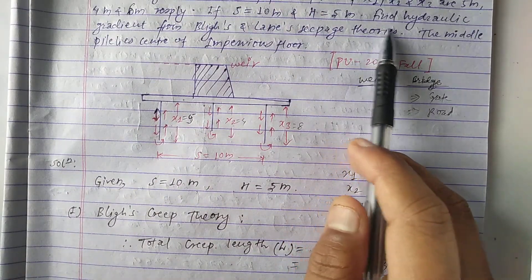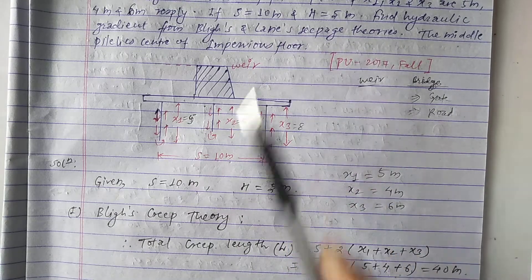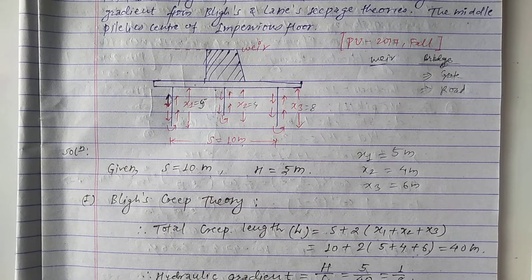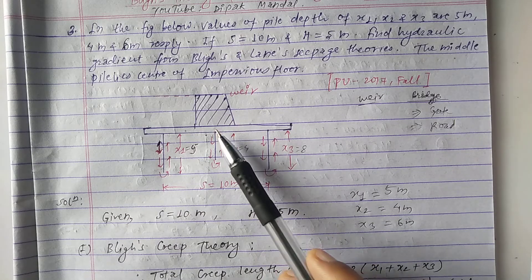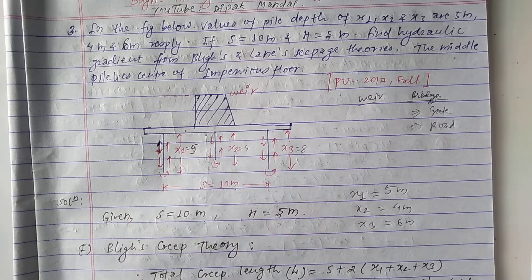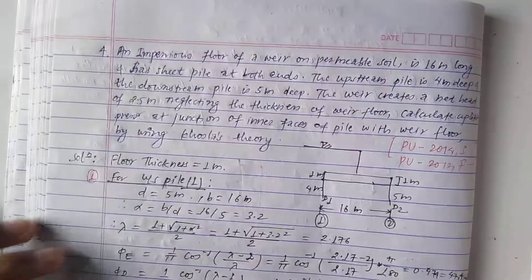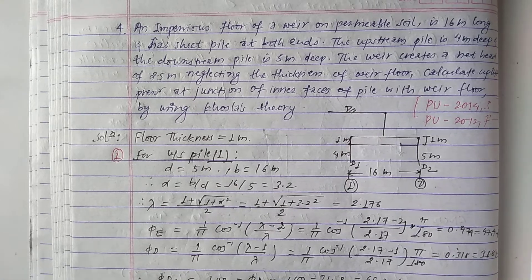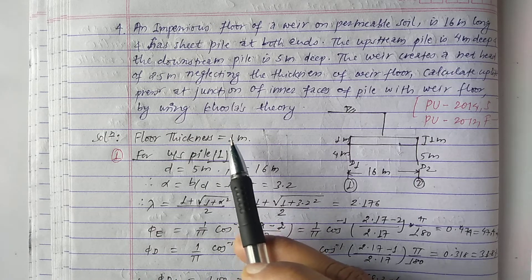So to summarize: according to Bligh's creep theory the hydraulic gradient is 1/8, and according to Lane's weighted creep theory the hydraulic gradient is 1/6.67. This completes the numerical. Hope you understood well. If you have any queries, please comment below. I will do more similar numerals in the next video. Thank you very much — please like, share, and subscribe.